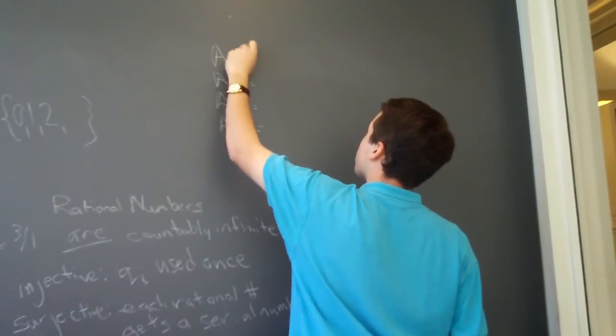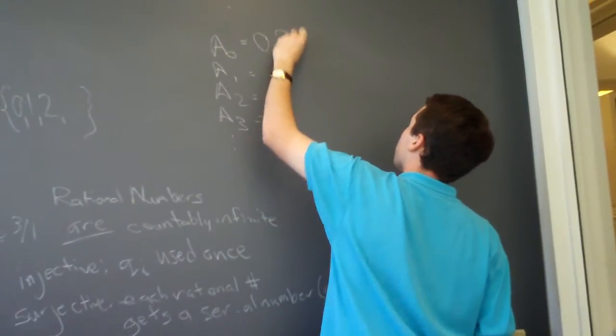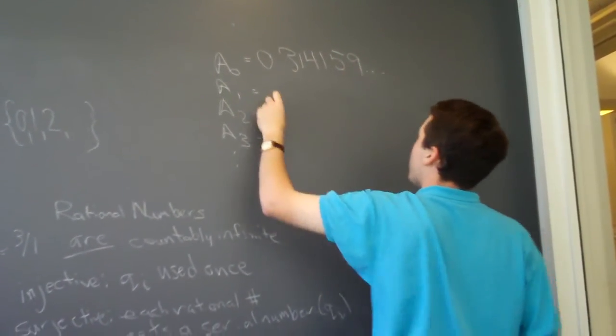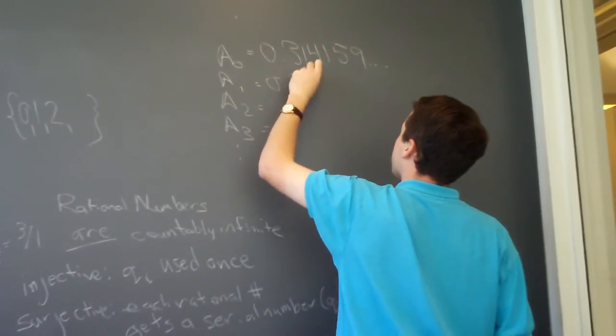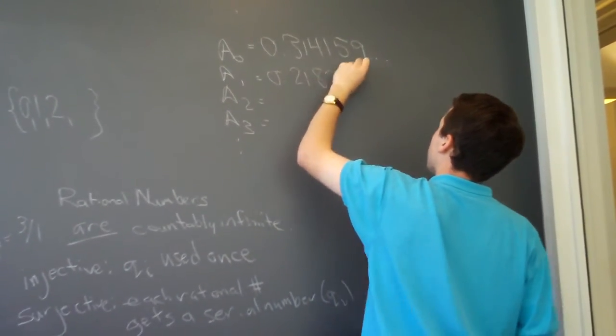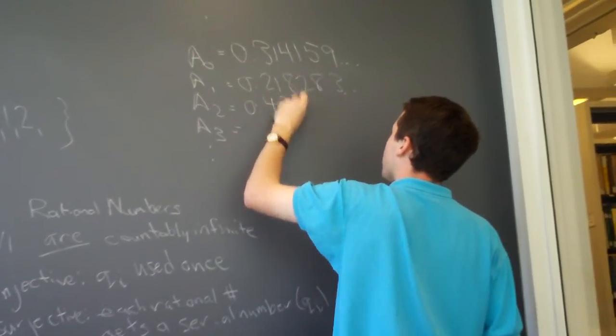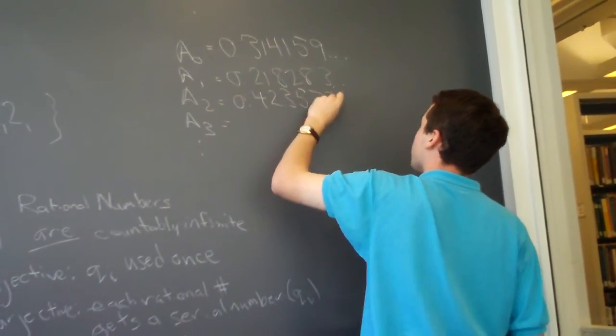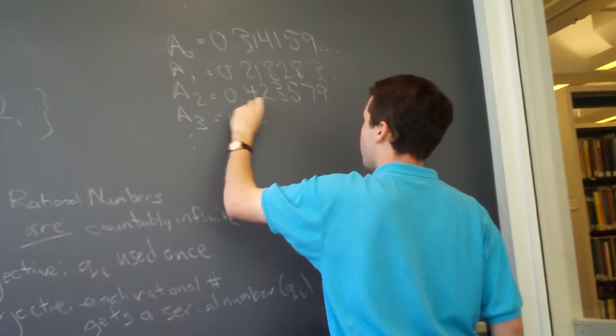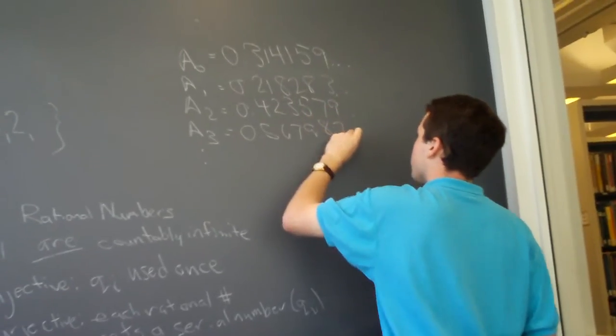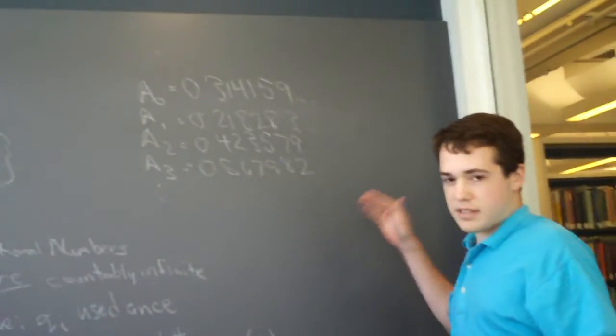And each one of them is going to map to an infinite decimal of sorts. And we're going to just list them as this, and we can really pick any numbers here, because supposedly all the real numbers should be on this list at some point. So, here's our example of this list.